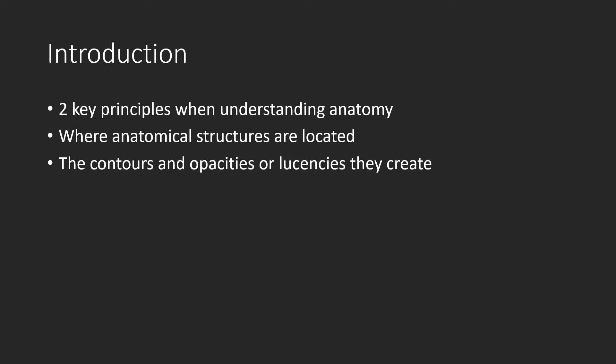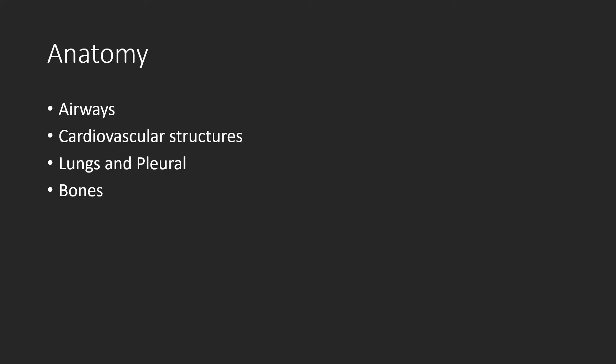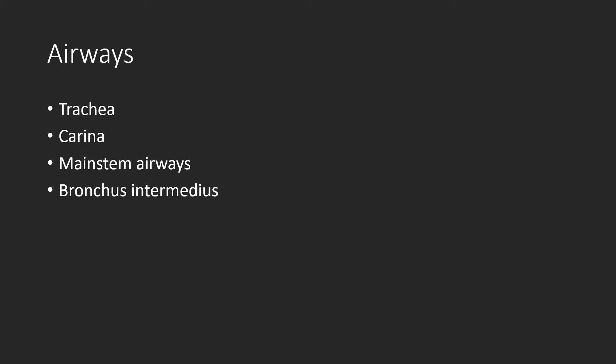That is, what contours, opacities, and lucencies do they actually create? The anatomy we will be focusing on in this lecture are related to the airways, cardiovascular structures, lungs and pleura, and bones. We will be focusing on the trachea, carina, mainstem airways, and the bronchus intermedius.